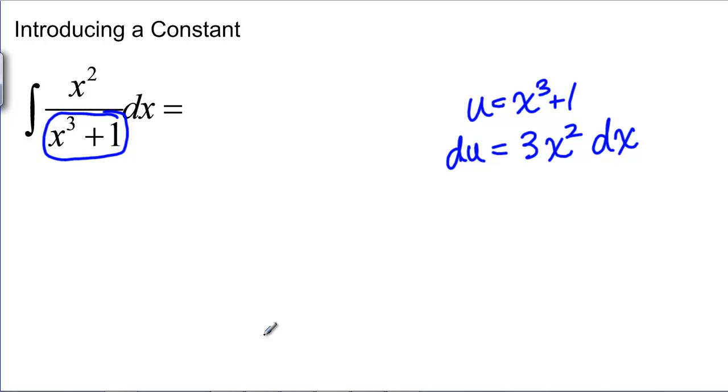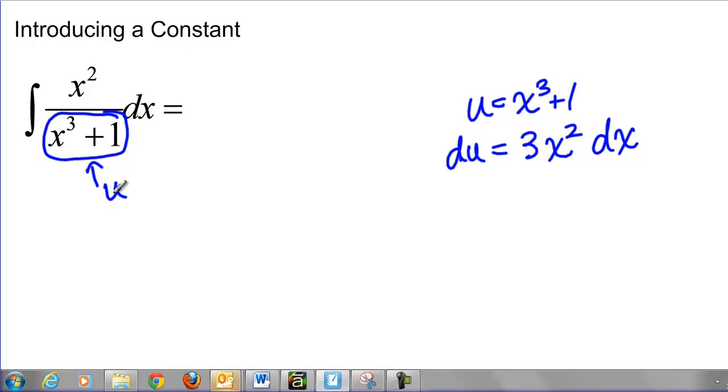Now I have DU equals 3X squared DX, and if you remember what we did on the previous problem, we're trying to match stuff up. We have X cubed plus 1, that's going to be U, but we also need to match up this DU. This is really important when doing U substitution. You're only allowed to make a U substitution if you can exactly match stuff up, so that you can replace the DX with a DU, so that you're now integrating in terms of U, and there's no X's left over.